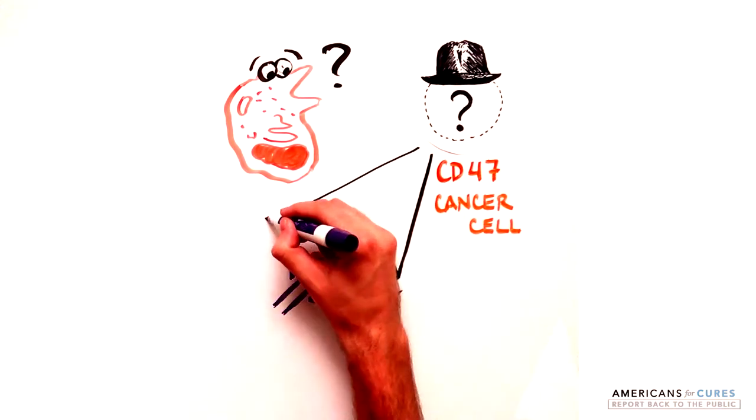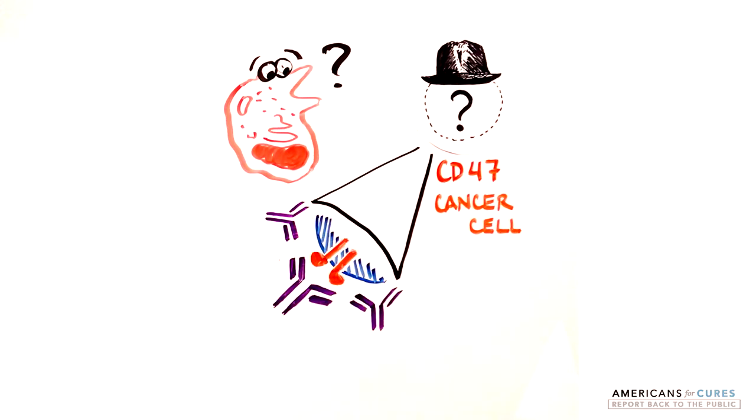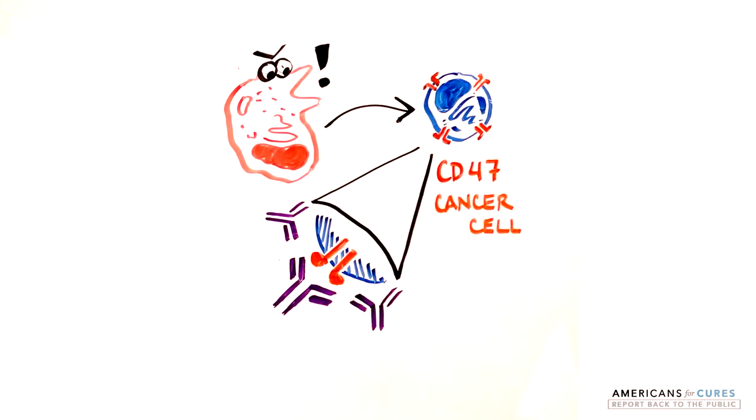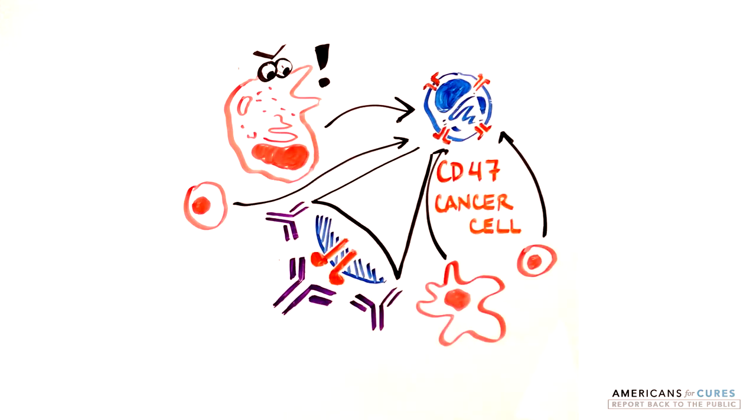When the CD47 antibody is present, it would bind to CD47 on the surface of cancer cells, removing the invisibility cloak and alerting the immune system that something is wrong with the CD47 expressing cancer cell and that it should be destroyed.